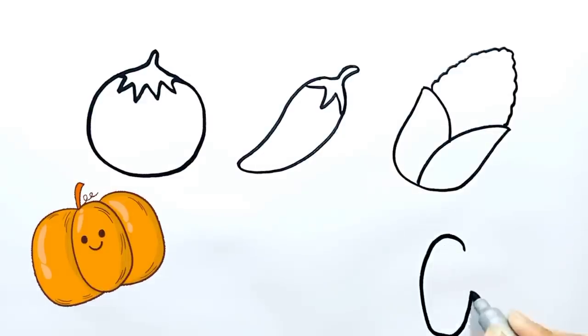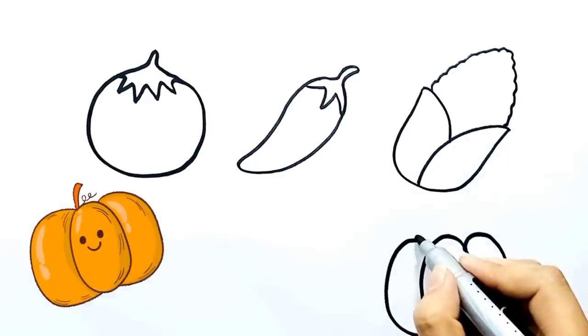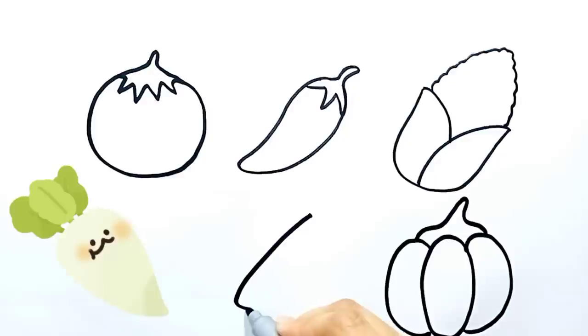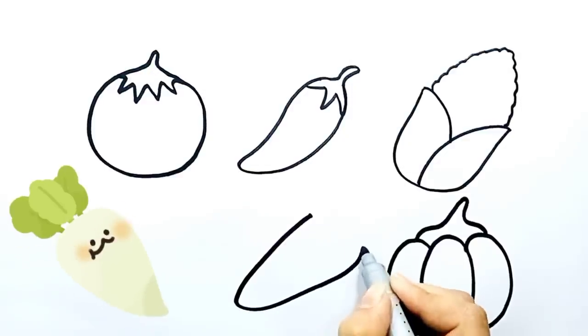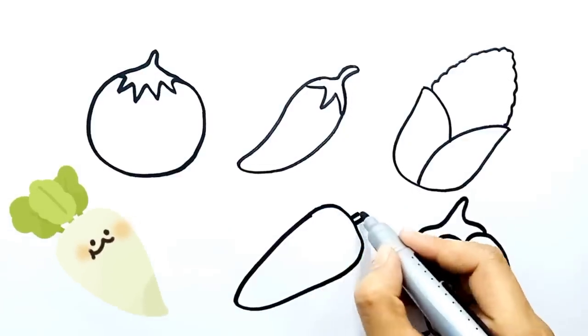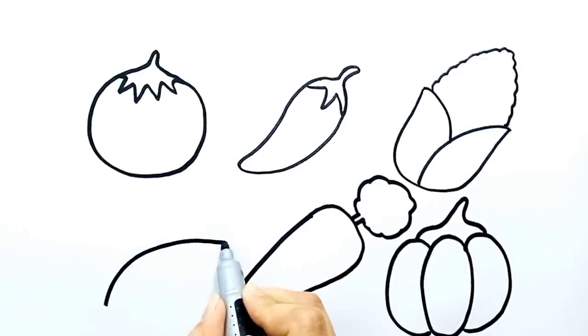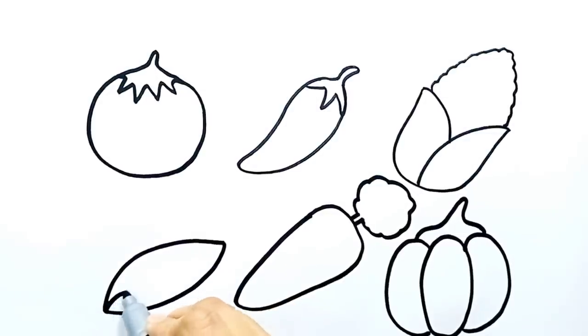Here I am drawing a bell pepper. It's one of my favorites. Let's draw a radish. Vegetables are very healthy food. At last I am drawing peas.